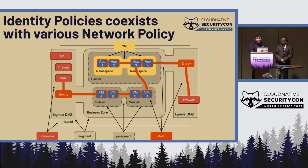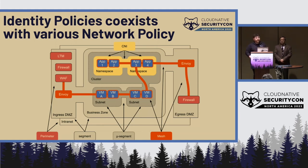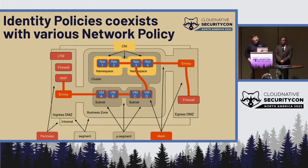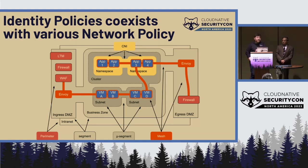We see this as layering on top of each other. We still anticipate traditional perimeter-based controls, with segmentation or microsegmentation underneath, and CNI sitting on top of that as another layer. We want the mesh to fit exactly on top of all those. The advantage is that we can start to relax lower-level policies that are hard to maintain in favor of policies allowing these gateways to communicate, backed by identity-based policy instead.